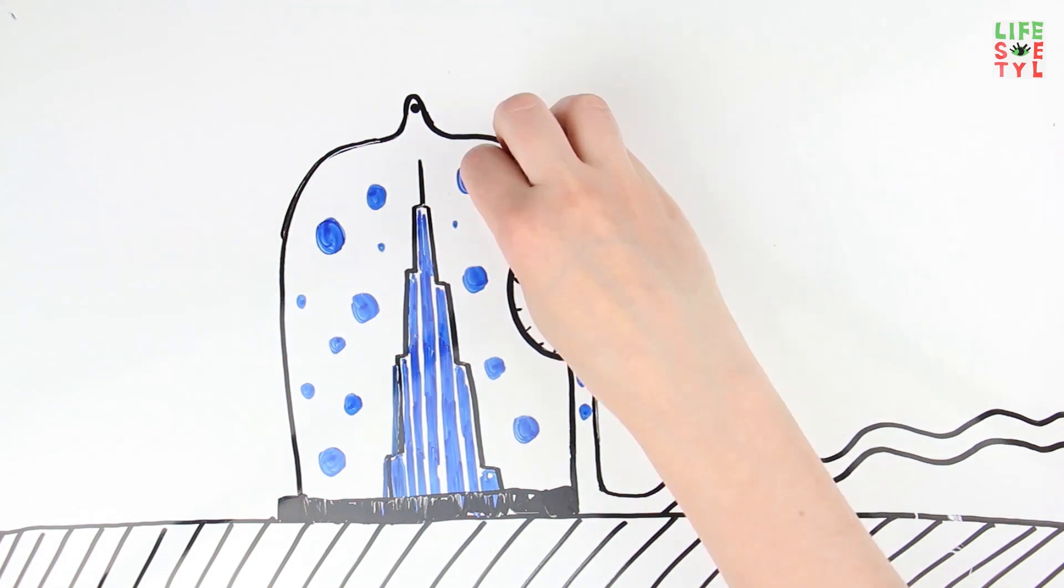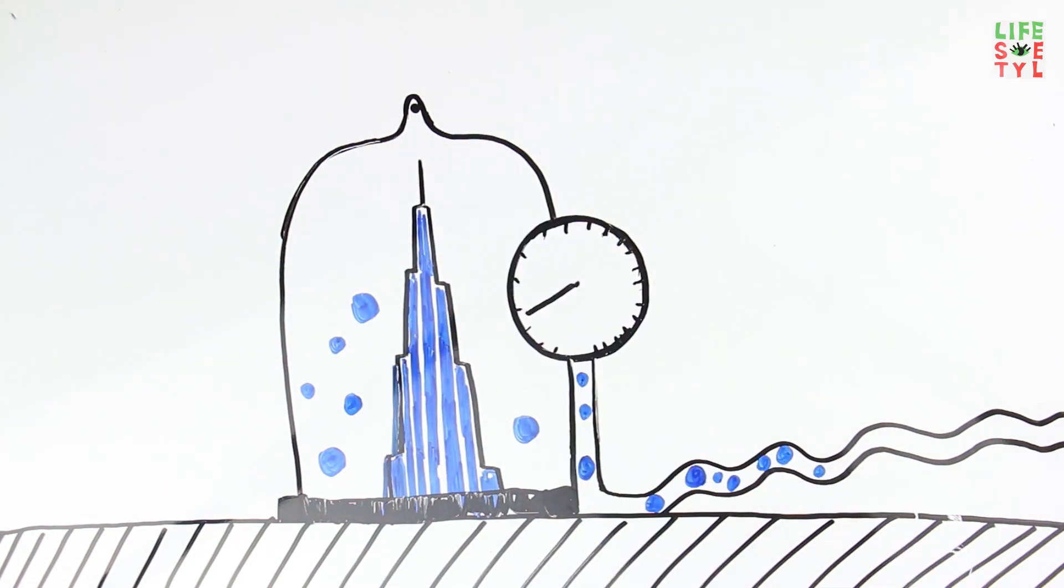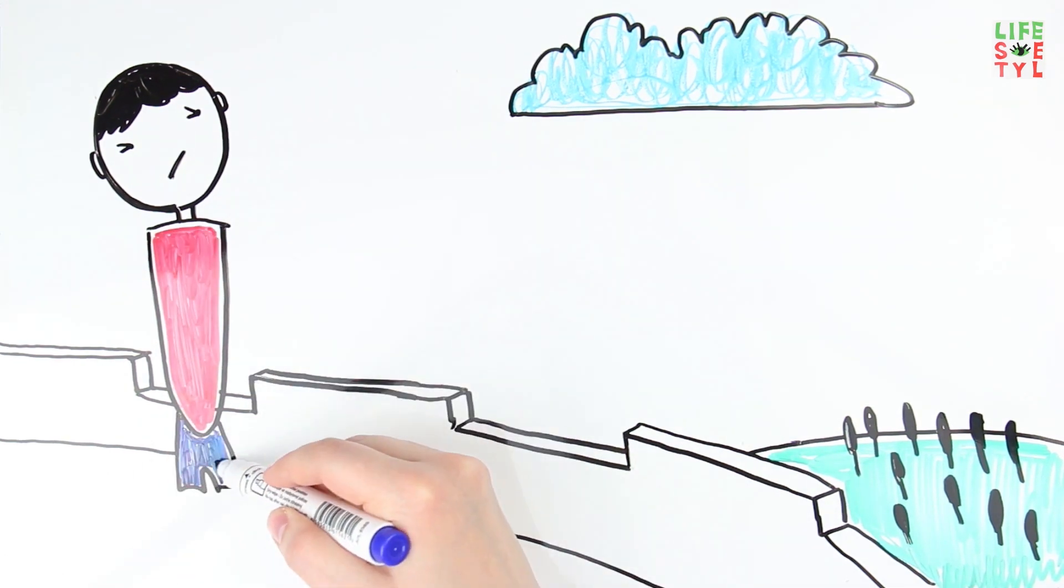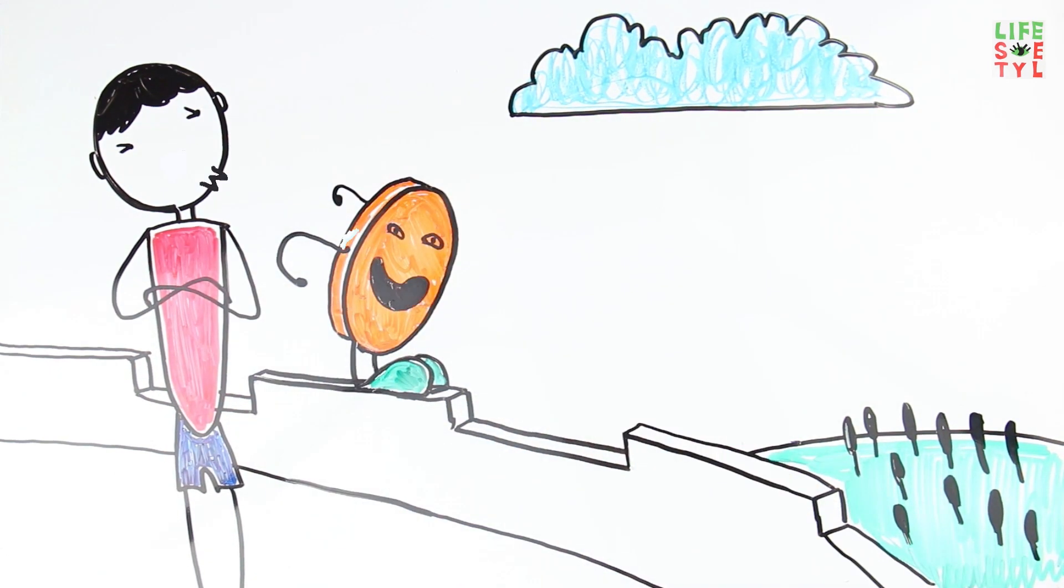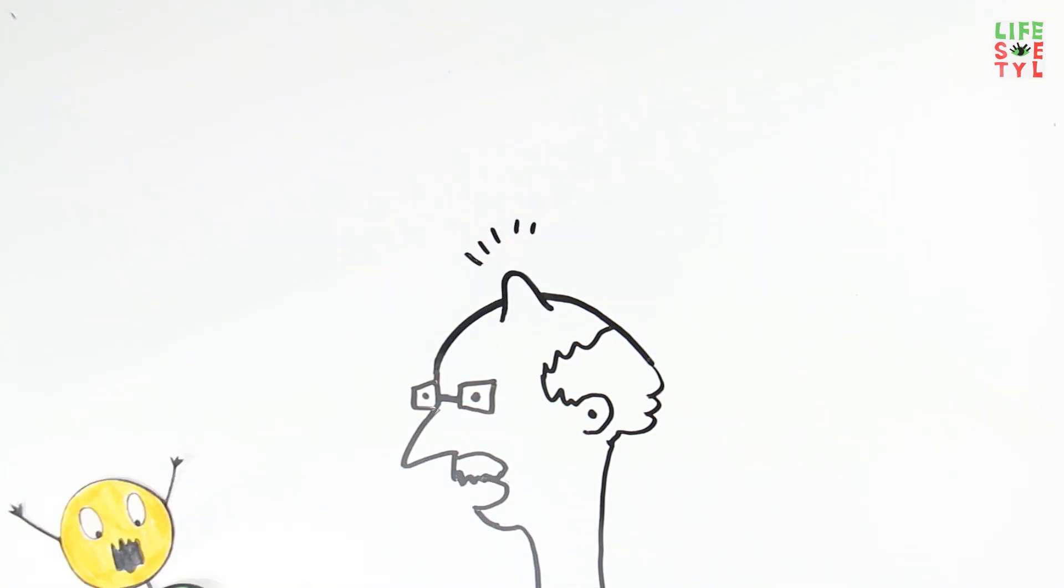We will conduct the same experiment under conditions that exclude the resistance of air and wind. So we throw a coin from the Burj Khalifa skyscraper in a vacuum devoid of air. Now the slowing down factors do not affect the fall speed of the coin. But even in this case, due to its small weight, the coin will not be able to kill a person.